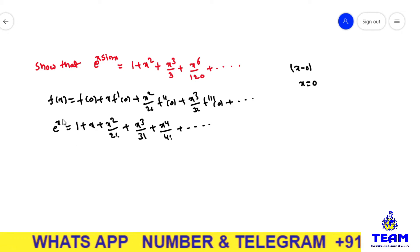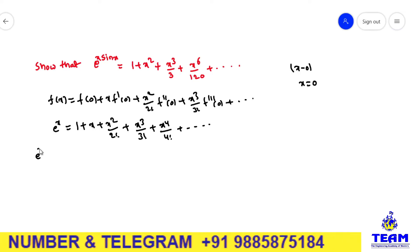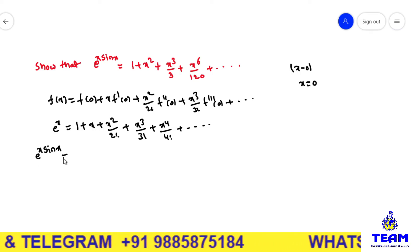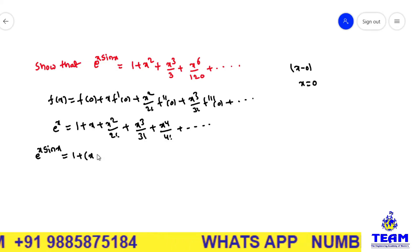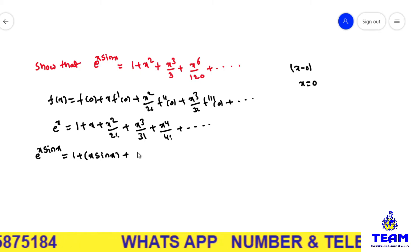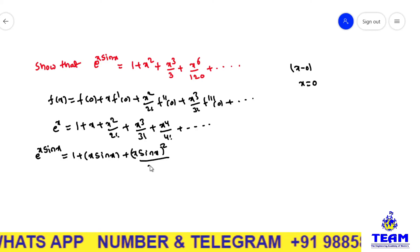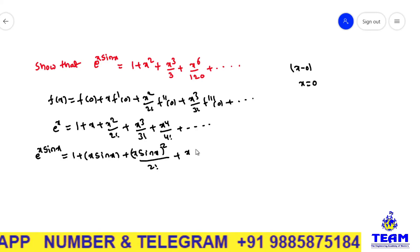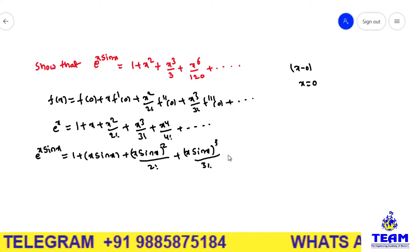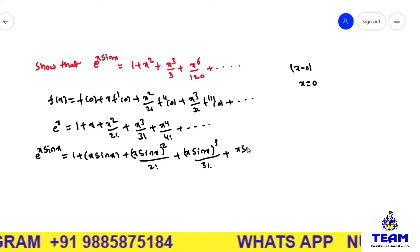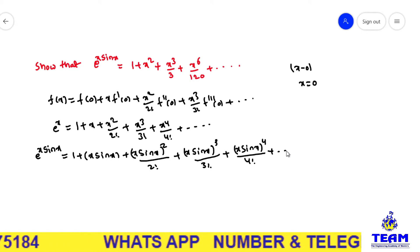Now, in place of x we have x·sin x, so we replace x with x·sin x. Then e^(x·sin x) equals 1 + (x·sin x) + (x·sin x)²/2! + (x·sin x)³/3! + (x·sin x)⁴/4! and so on.